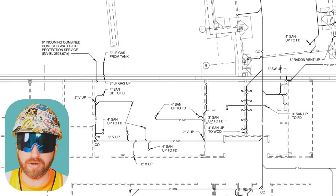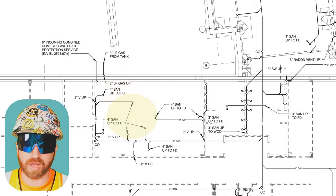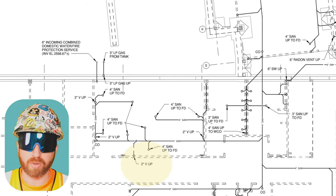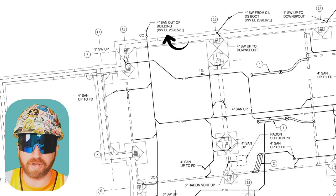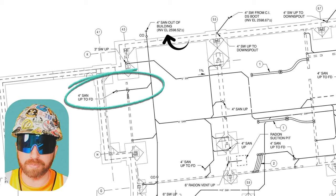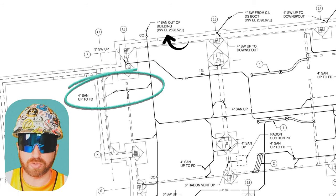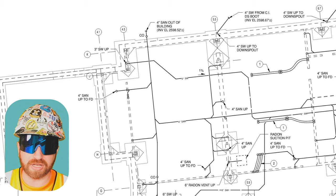Each line is identified with the abbreviations we looked at earlier. We see SAN for sanitary, SW for stormwater, LP for gas, and V-UP which stands for vent piping up. Jumping back to the sanitary line, if I follow the piping it leads to three circles. Remember, these symbols indicate that the piping stops being run horizontally and turns and goes vertically upwards. This one is specifically identified as FD, which stands for floor drain. Let's look at this on the next drawing page and see how it relates.